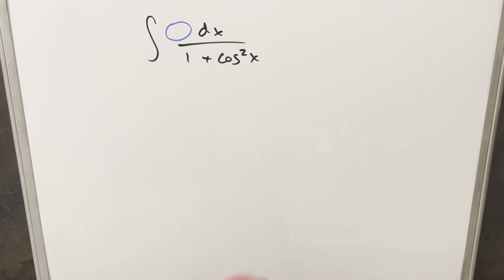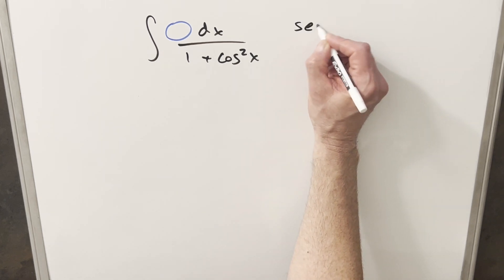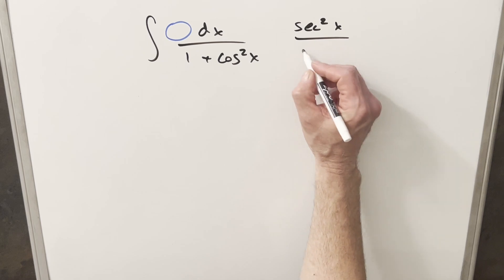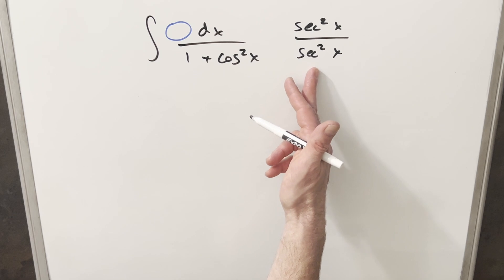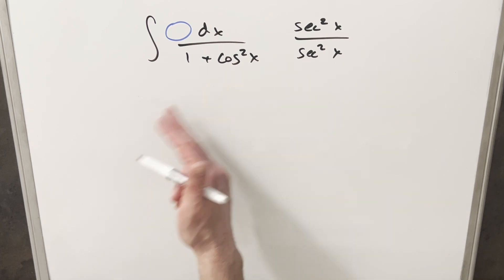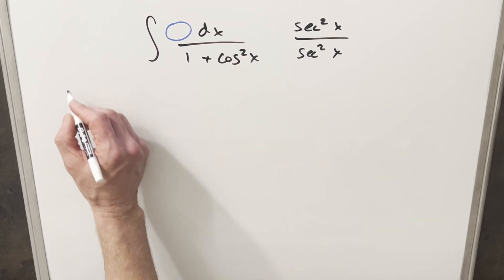The thing that seems to work so often with trig integrals is if we just multiply the numerator and denominator by secant squared x over secant squared x—we're multiplying by 1. The nice thing about this is secant squared x times cosine squared x is just 1, so we can rearrange the whole integral this way.